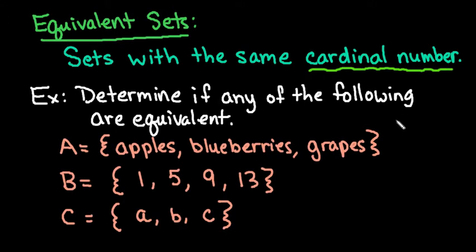Okay, so let's look at an example. We're going to determine if any of the following are equivalent. So set A contains the elements apples, blueberries, and grapes. So the cardinal number for set A is equal to 3.